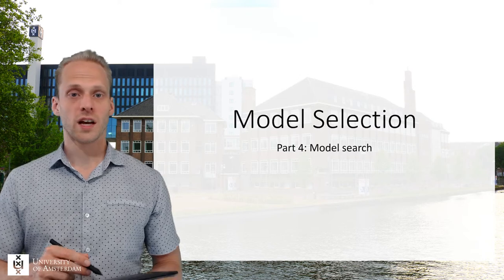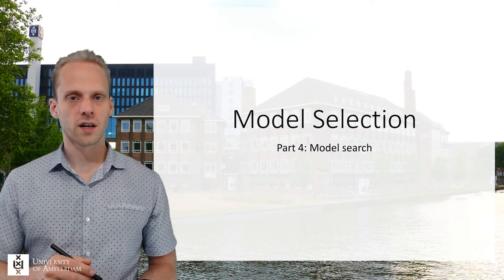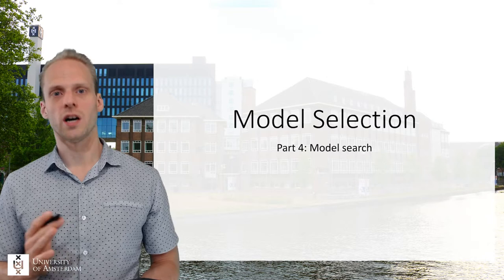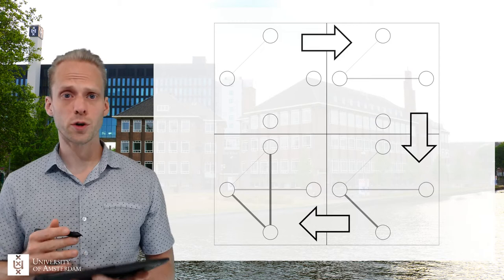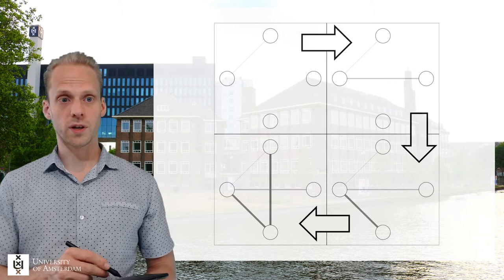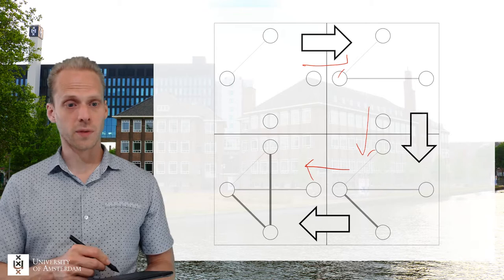The last type of model selection we'll look at is model search. These are the most powerful methods of detecting your network structure, but they're also the hardest, so they take a very long time. The idea of model search is to really search through the model space until we get to a local optimal model. For example, here we add an edge, we add another edge, we add another edge, and then we might say okay, this is where we stop. So we can use extensive model search strategies to find the best model.